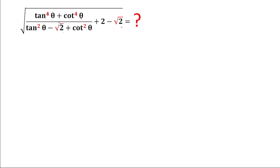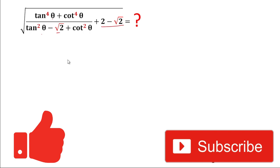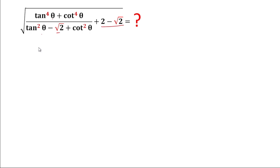Hey friends, welcome back! Today we are going to solve this trigonometric problem. The given problem is: under root of (tan⁴θ + cot⁴θ) divided by (tan²θ − √2 + cot²θ + 2 − √2). Please give thumbs up to the video and do not forget to subscribe my channel. Now let's start the video.